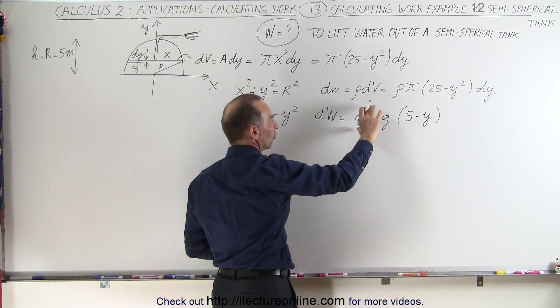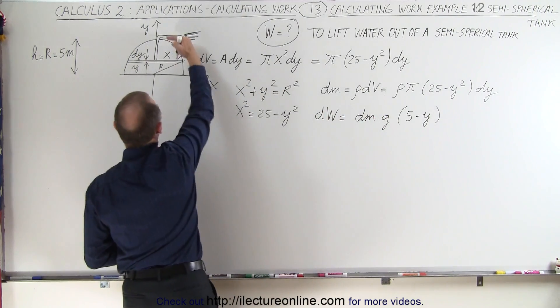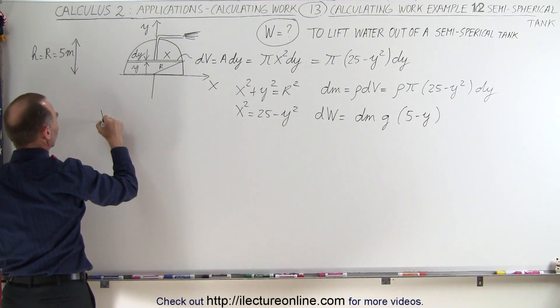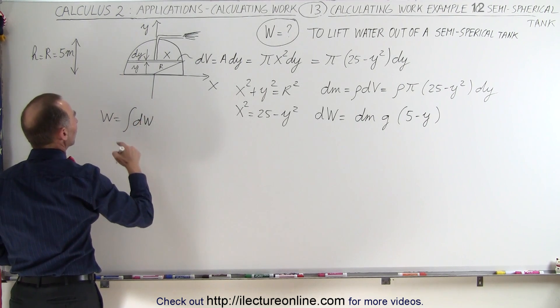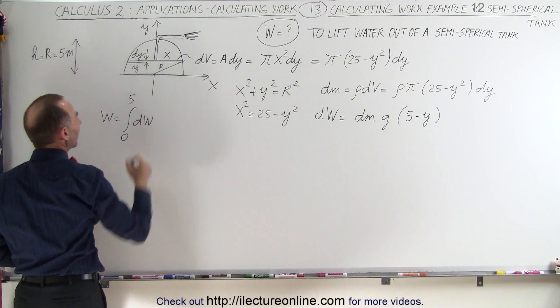That would be the work done to lift a small little slice to the top. Therefore the total work done equals the integral of all the little dWs. We're going to integrate from y equals 0 to y equals 5.